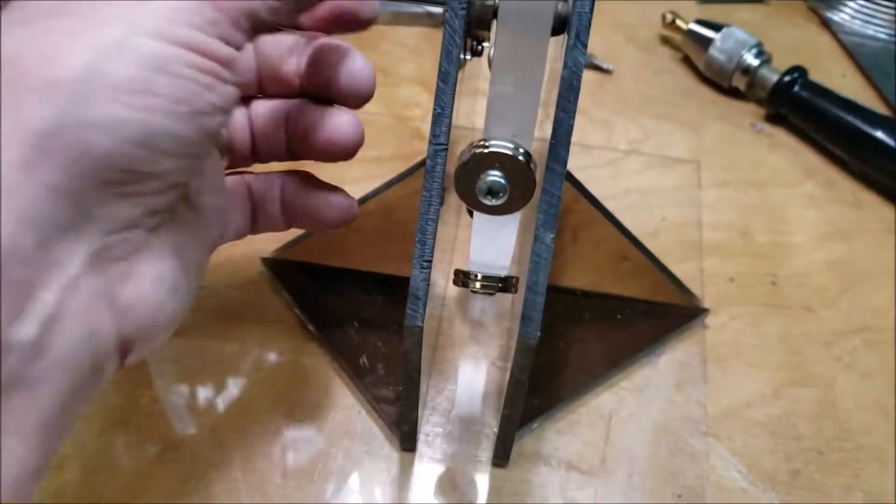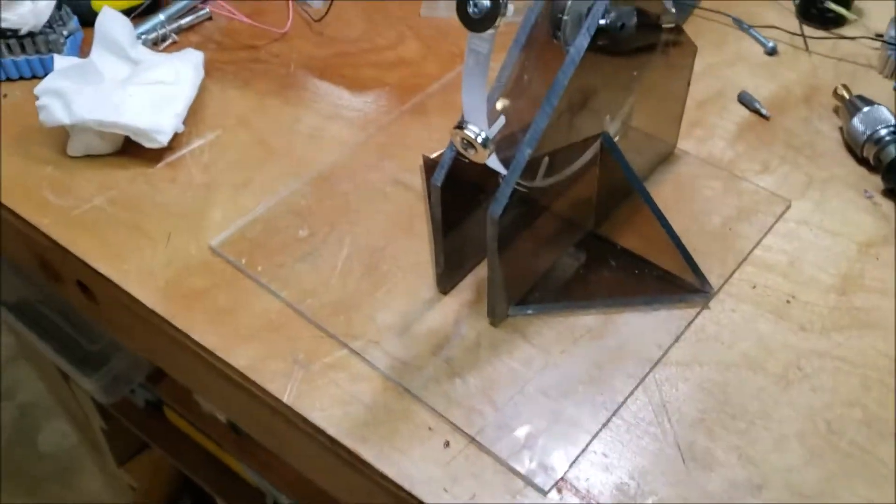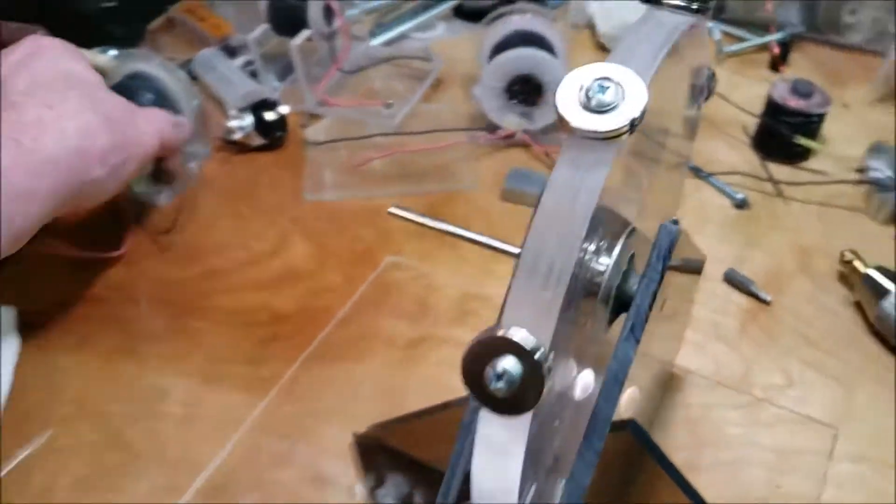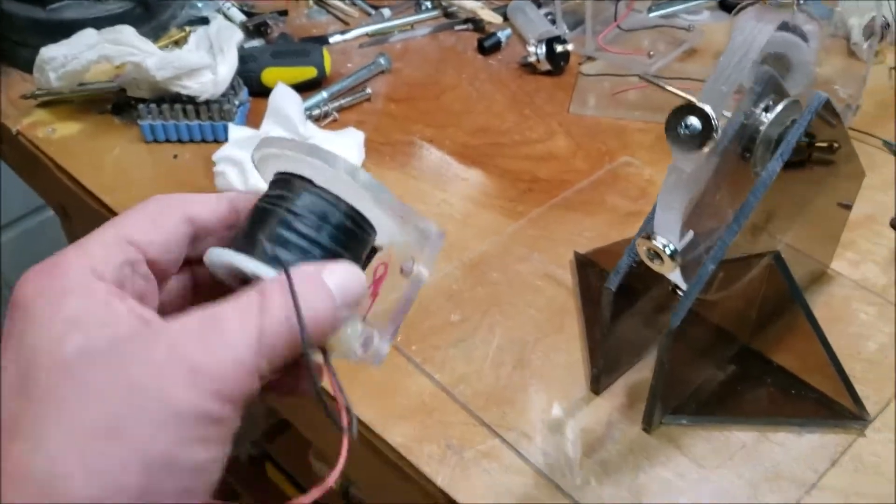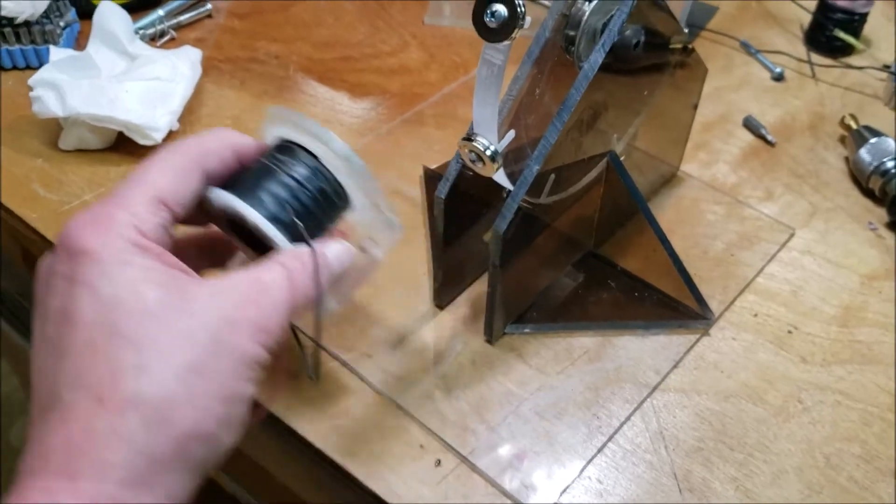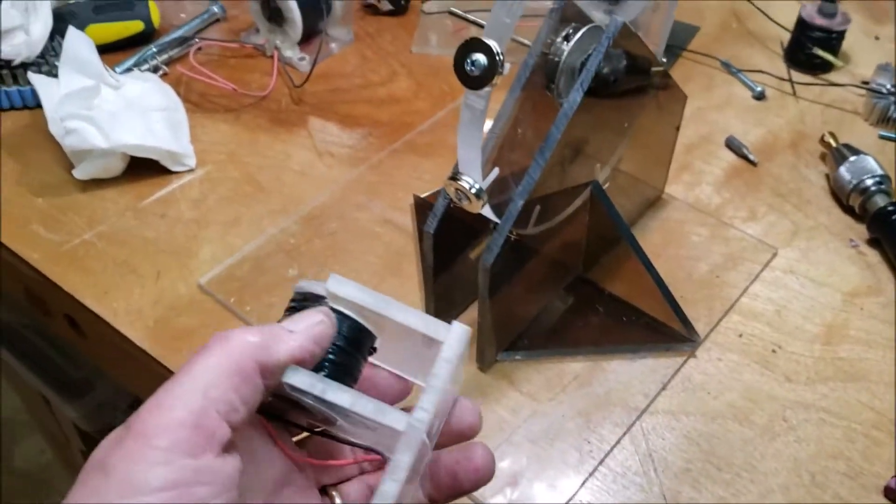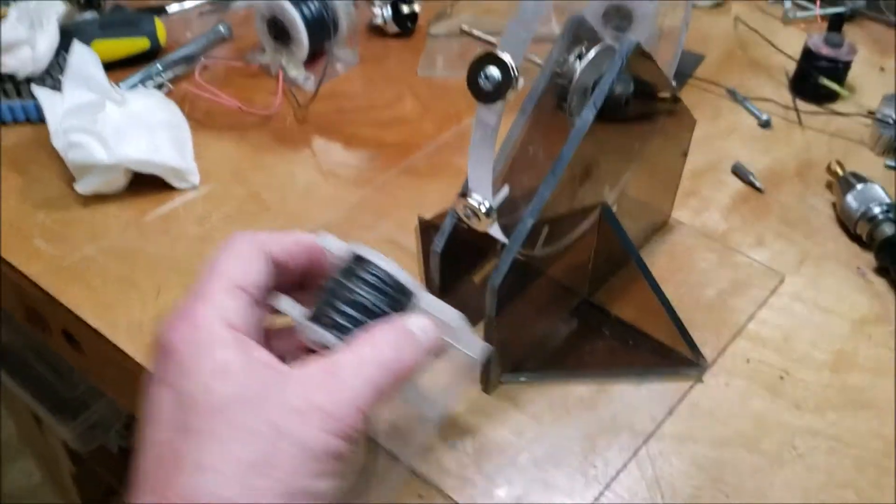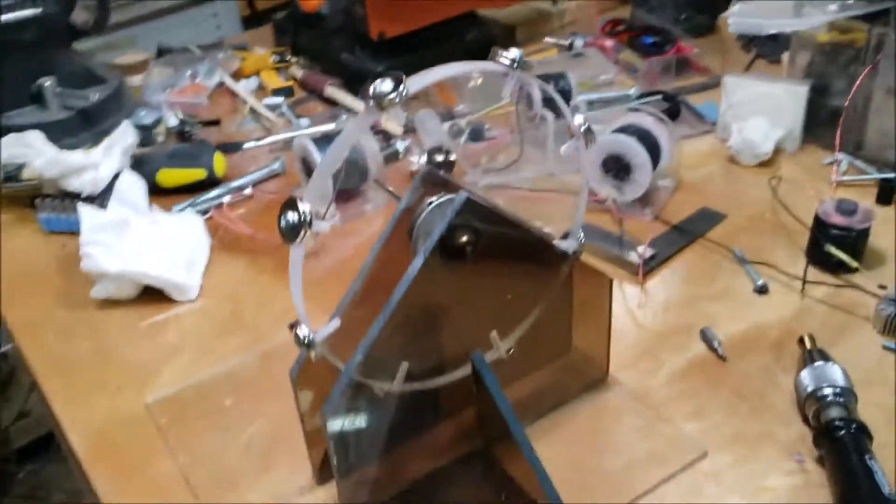And I'm still deciding on whether I'm going to use like one of these, my filer coil. I would mount it like right there or something. Or if I'm just going to use a regular single coil and trigger it using the hall sensor.